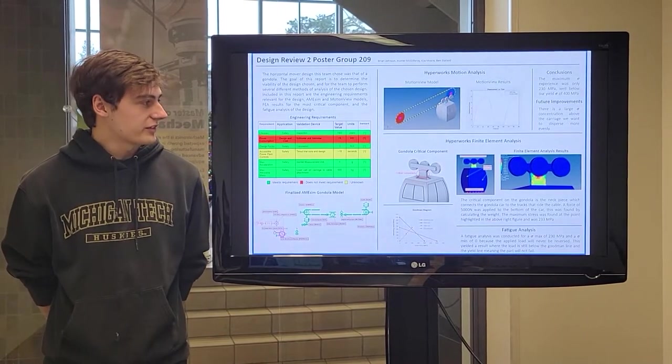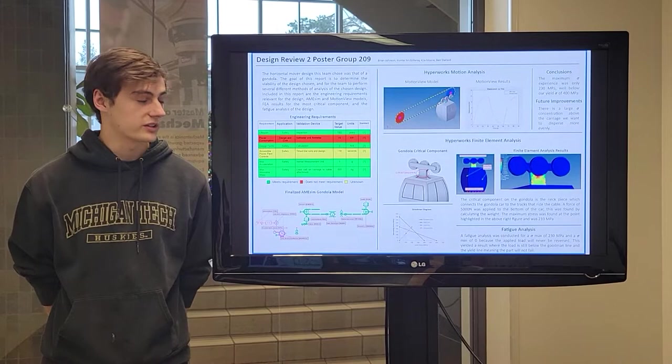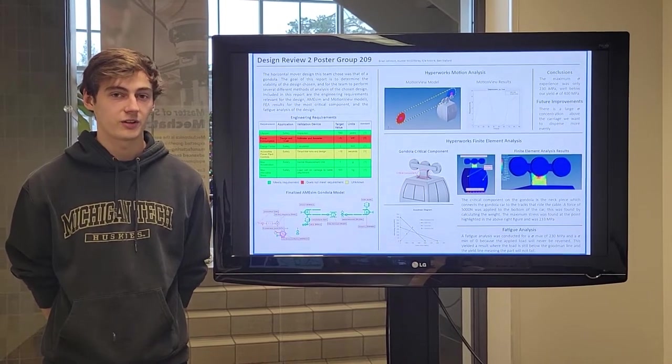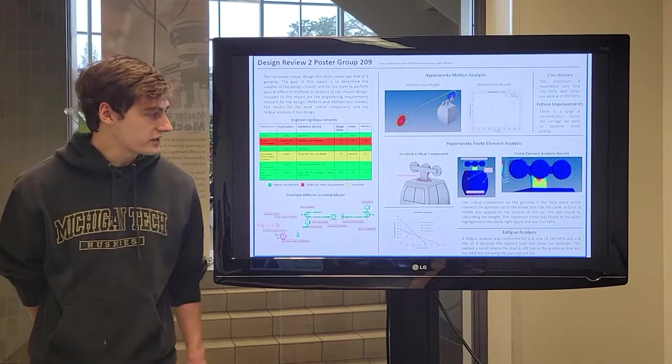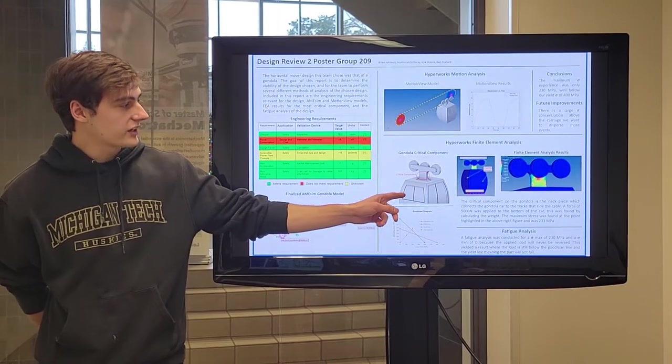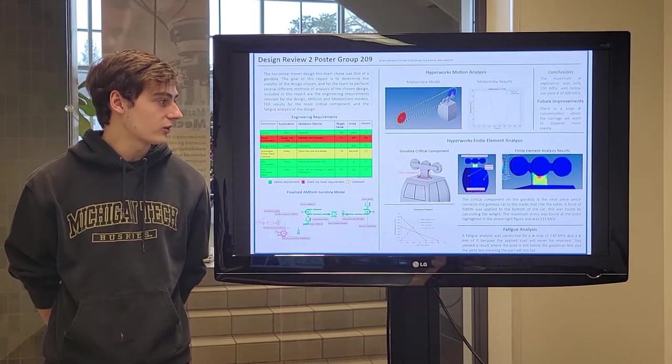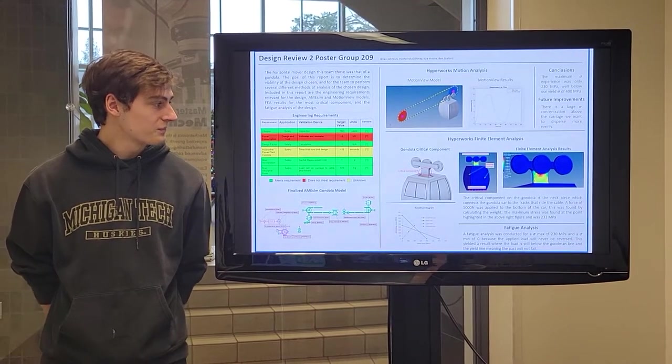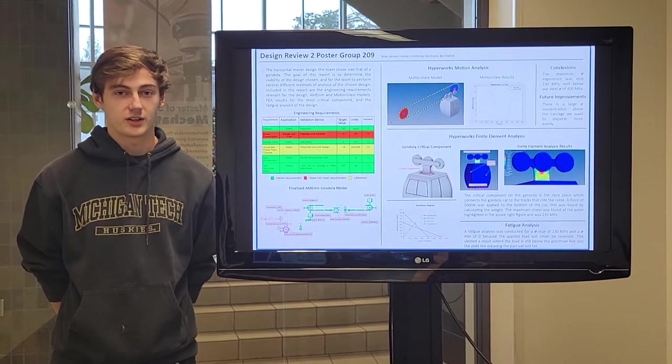The first thing in the FEA analysis that we had to do was identify the critical component, and this is the component most likely to fail. We determined that on the gondola, the critical component was the neck piece between the car of the gondola and the rollers that would roll across the belt or the cable. This is because this had the smallest cross-sectional area on the whole gondola.